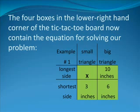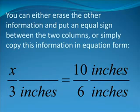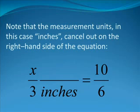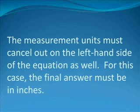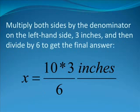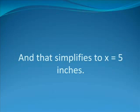You can either erase the other information and put an equal sign between the two columns, or simply copy this information in equation form. Your equation form reads like this: X over 3 inches equals 10 inches divided by 6 inches for this particular problem. Note that the measurement units, in this case inches, cancel out on the right-hand side of the equation. Then we have X divided by 3 inches equals 10 over 6. Multiply both sides by the denominator, 3 inches, and then divide by 6 to get the final answer. X equals 10 times 3 inches divided by 6, and that simplifies to X equals 5 inches.